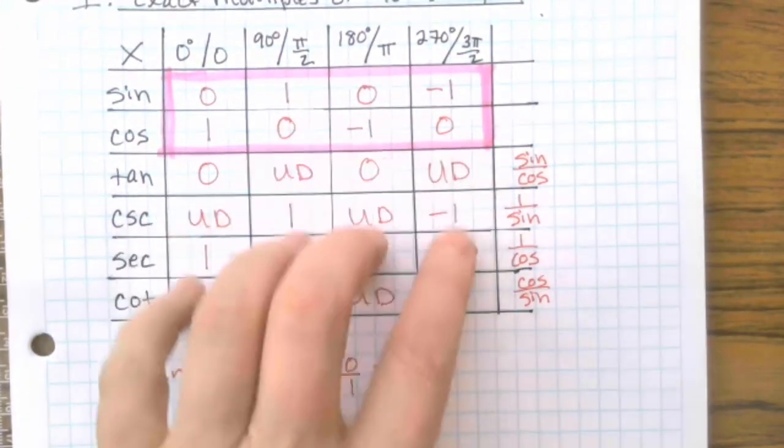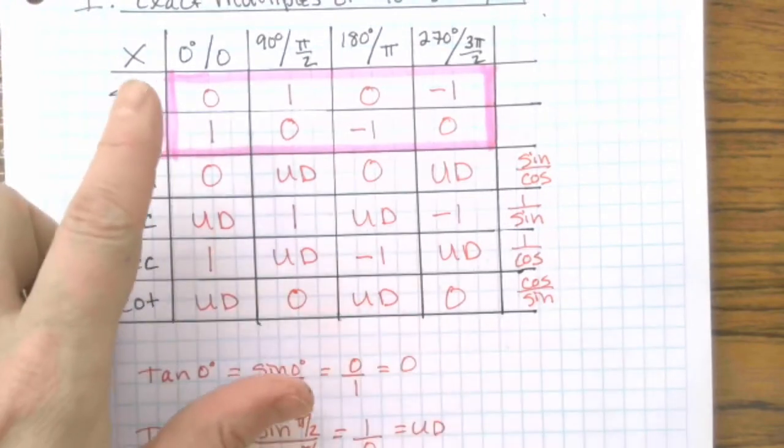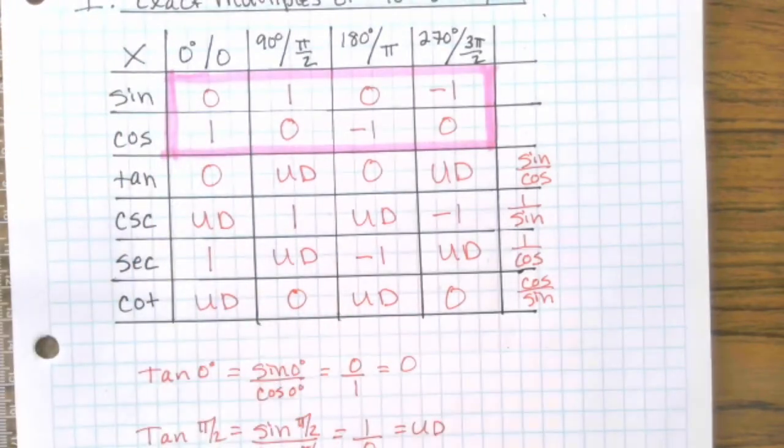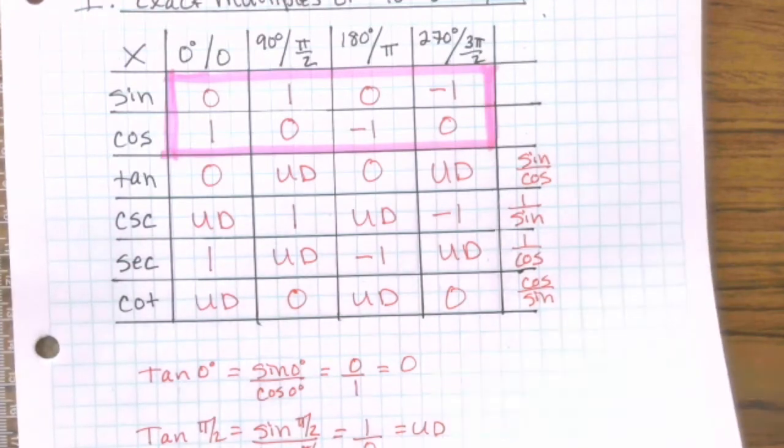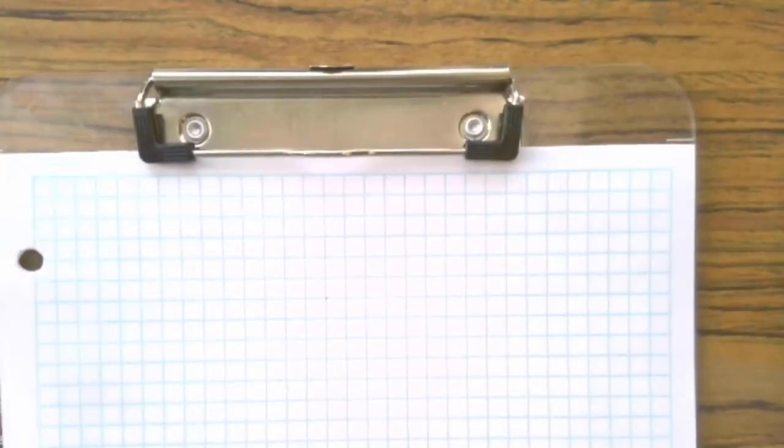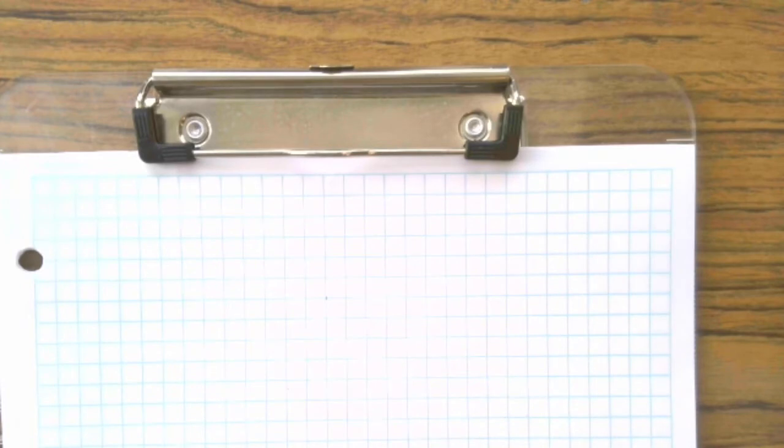So you can really get the rest of these if you need to from sine and cosine, which minimizes what you have to actually memorize. That's the first thing I wanted to do was go through the basic chart with you. I'm going to flip the page here because I need some more space.